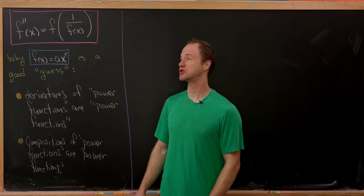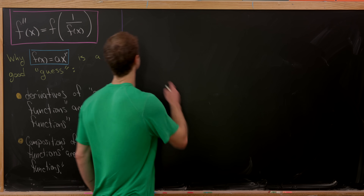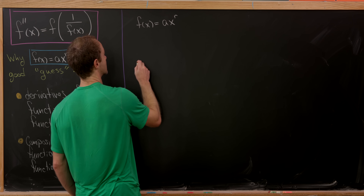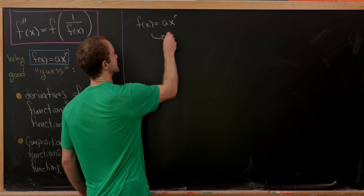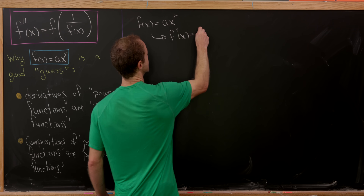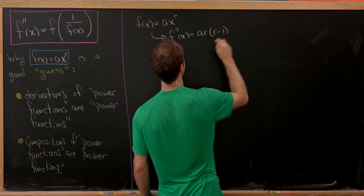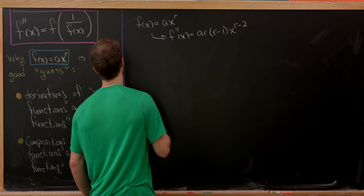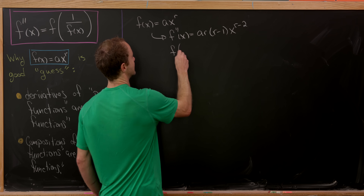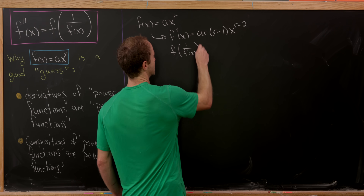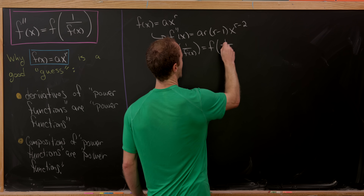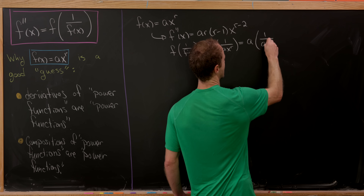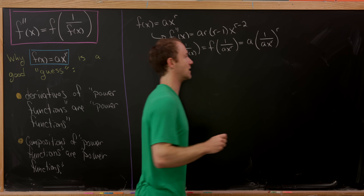So with f(x) equal to a times x to the r, the second derivative f''(x) is equal to a times r times (r minus 1) times x to the (r minus 2). And then f evaluated at 1 over f(x) is simply f evaluated at 1 over (a times x to the r), which equals a times (1 over a times x to the r) all raised to the r power.